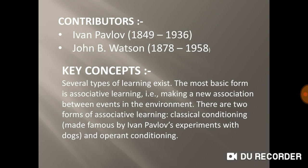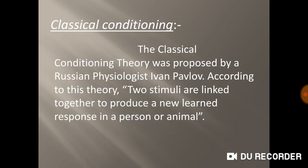The key concept of today's learning is that there are multifarious types of learning. The most basic form is associative learning, which is making a new association between events in the environment. There are two forms of associative learning: classical conditioning and operant conditioning. But today our topic is classical conditioning.